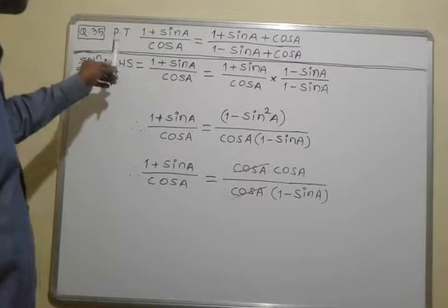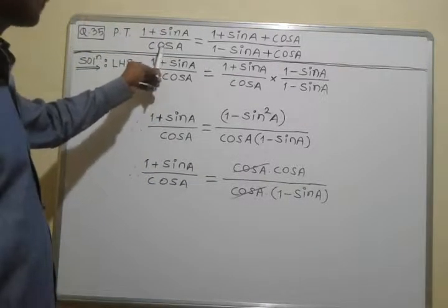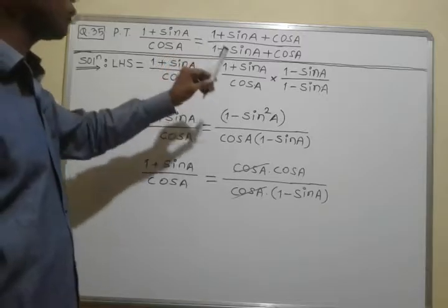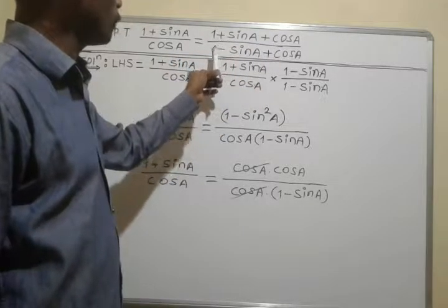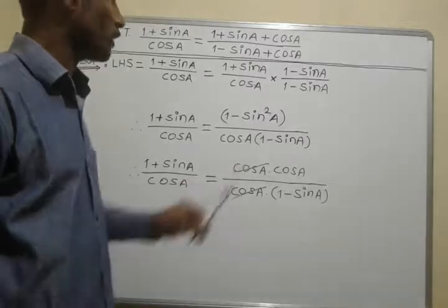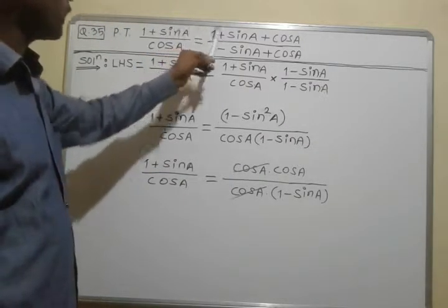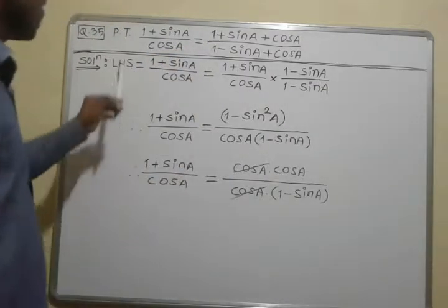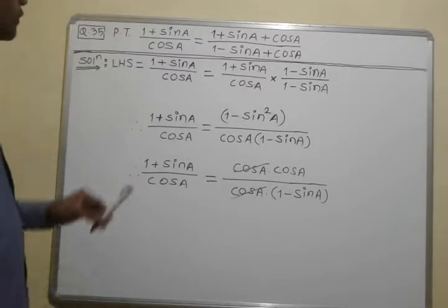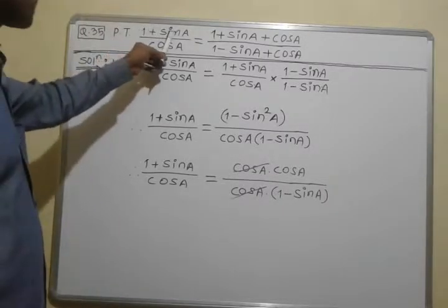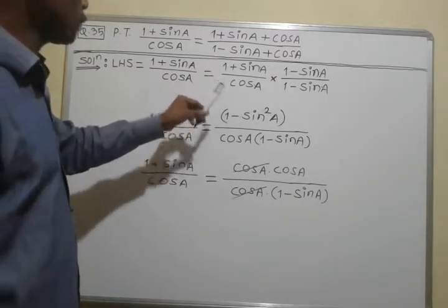This is an example of trigonometry. We need to prove that (1 + sinA) / cosA is equal to (1 + sinA + cosA) / (1 − sinA + cosA). Here we have two sides, LHS and RHS. For this solution I will take LHS first, that is (1 + sinA) / cosA.